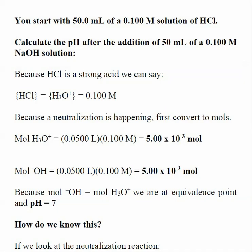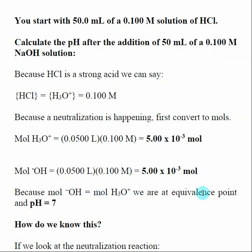After the addition of 50 milliliters of our 0.1 molar NaOH solution, we are at the equivalence point of our strong acid strong base titration. Remember that the number of moles of hydronium equals the number of moles of HCl because HCl is a strong acid, and the concentration of hydroxide equals the concentration of sodium hydroxide because sodium hydroxide is a strong base. When we calculate the moles of hydroxide added and the moles of hydronium initially present, they are equal — so we are at the equivalence point.